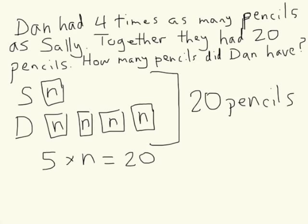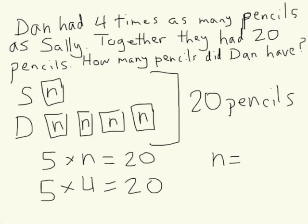So I have to think: five times what equals 20? I can figure out that five times four equals 20, so that means N has to equal four.